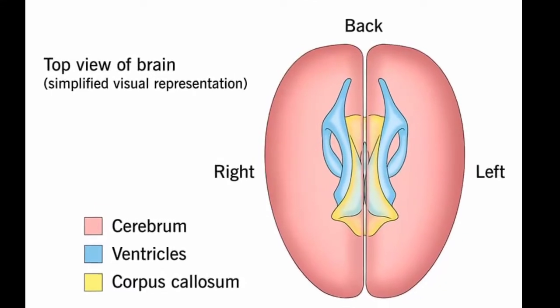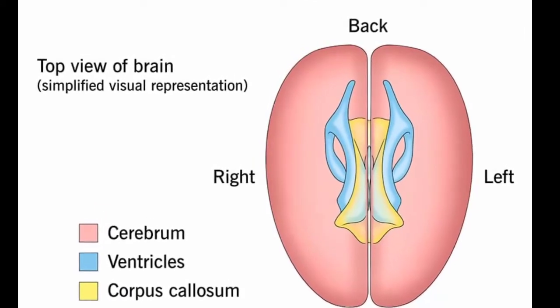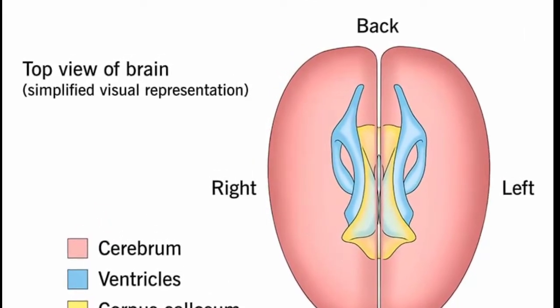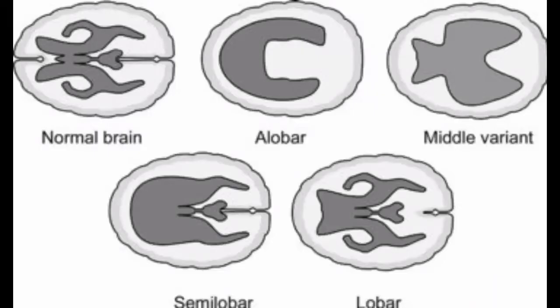The condition can also affect development of the head and face. There are four types of holoprosencephaly, distinguished by severity, from most to least severe.